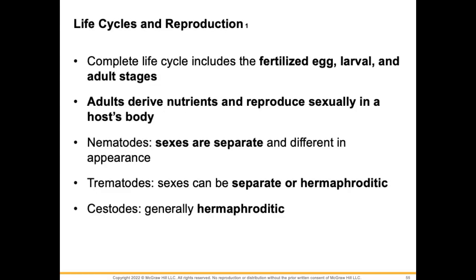Life cycles and reproduction: complete life cycles include the fertilized egg, larva, and adult stages. Adults derive nutrients and reproduce sexually in the host body. When we talk about nematodes, trematodes, and cestodes, each differs in how their reproductive parts are made up.